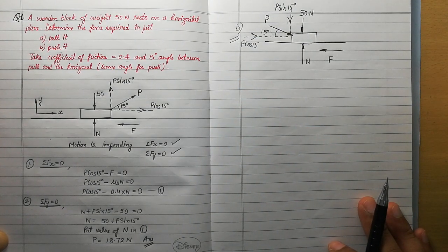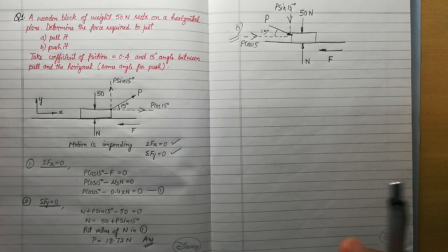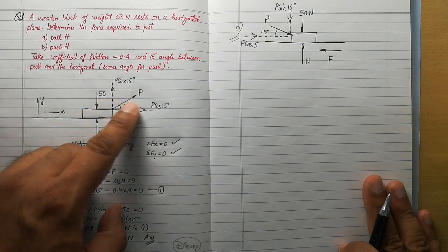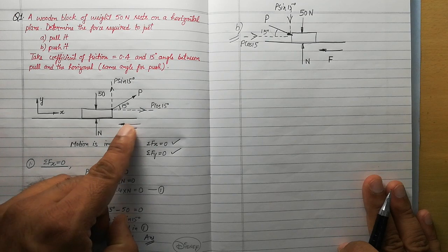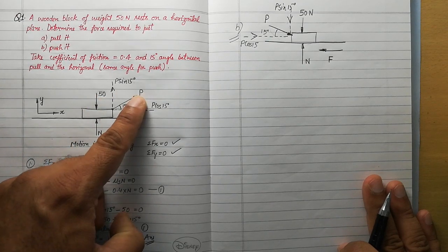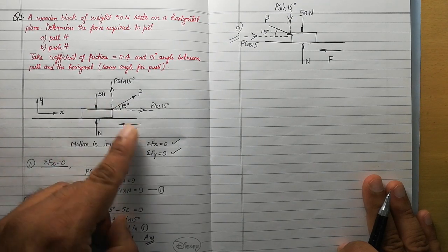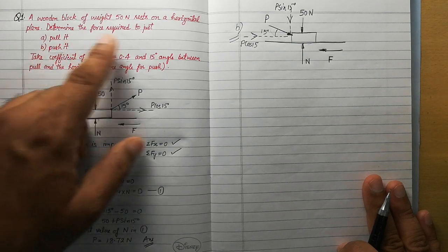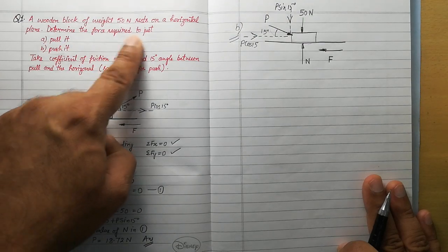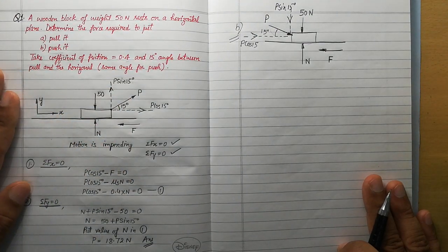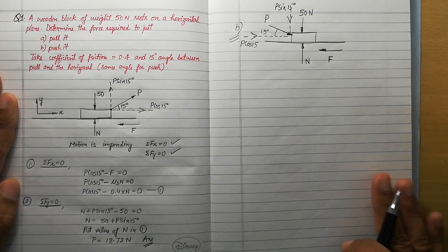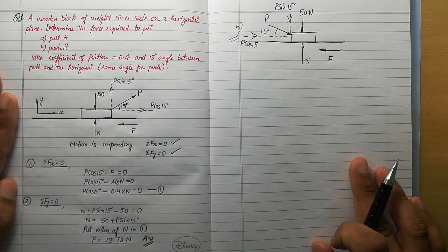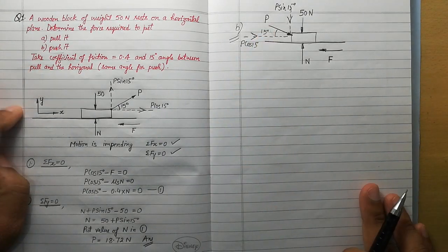In summary, to solve any friction problem: understand the statement carefully, draw the free body, label the weight and external forces with their components, show normal pressure, and identify the direction the body tends to move — friction acts opposite to that tendency. Check what the statement says: 'just pull/push it' means motion is just about to start, so equations of equilibrium apply. We used those two equations to solve for the unknown force in both Part A (pull) and Part B (push). Thank you very much.